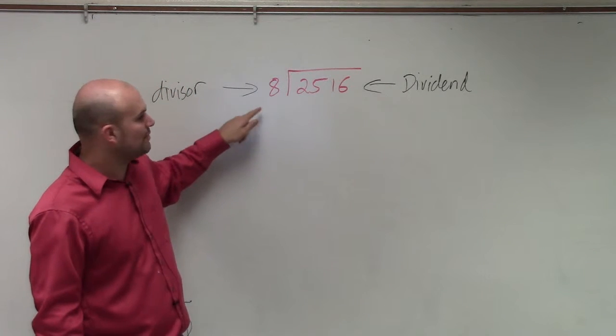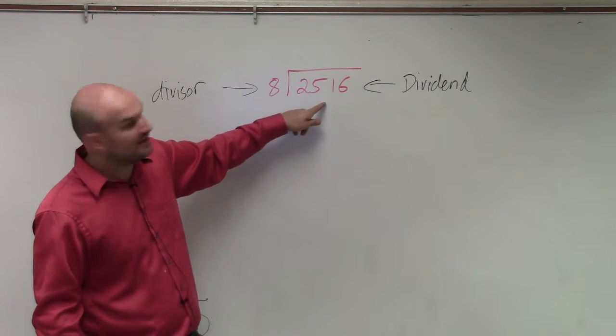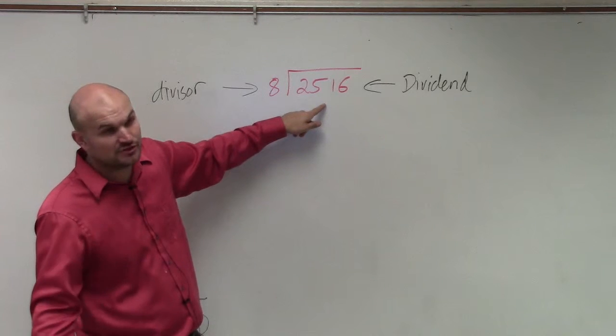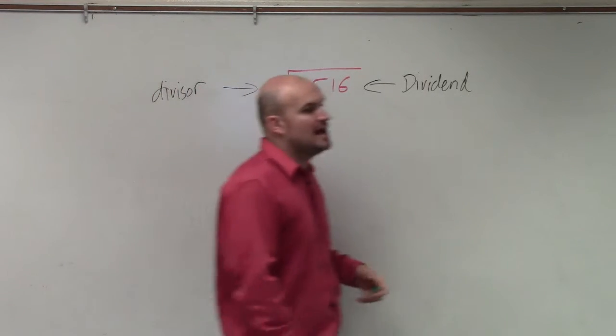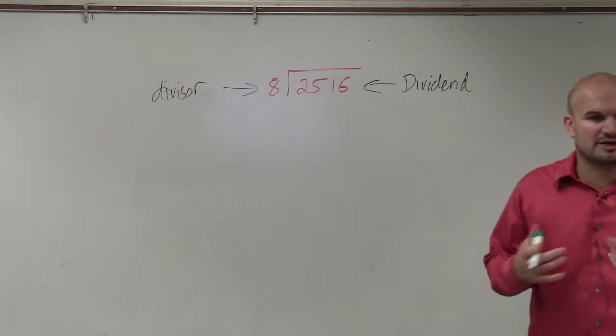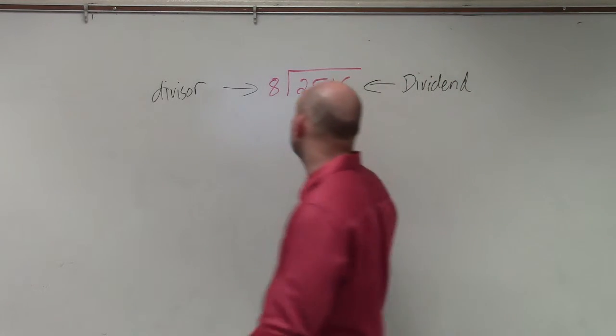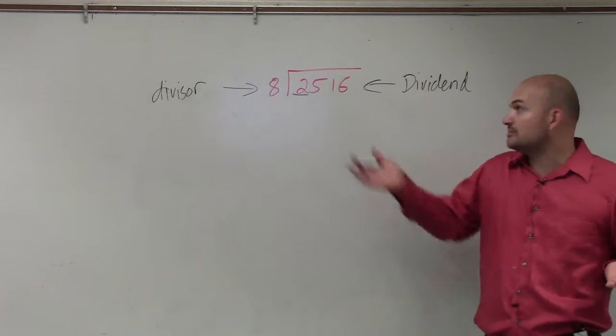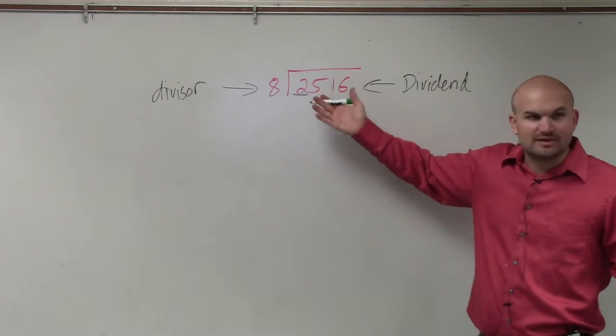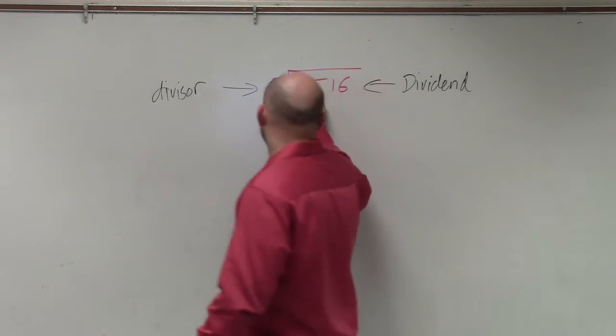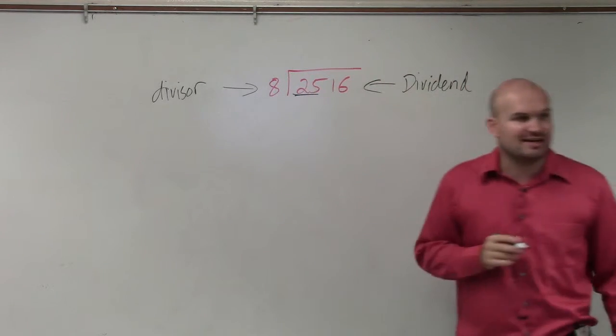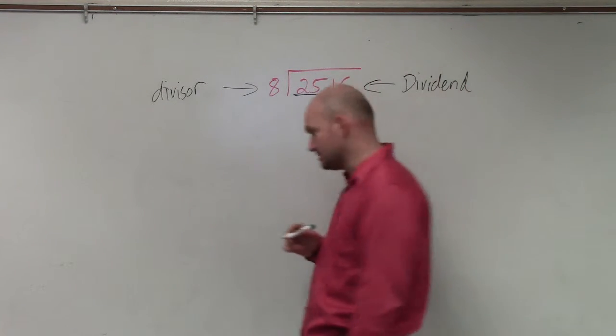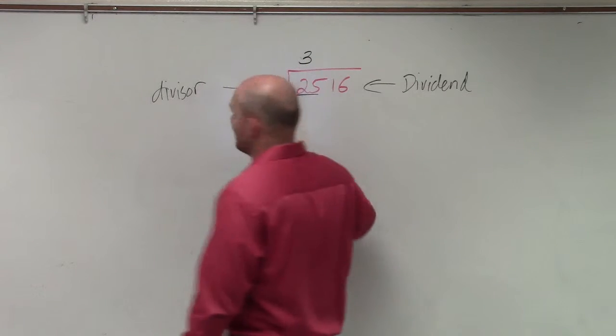Here's your divisor. That's what we're going to divide into our dividend, which is 2,516. Now when you're using long division, basically what we're going to do is use one place value at a time. I'm going to see, does 8 divide into the number 2 in the first place value? Well, 8 does not divide into 2. So then we go to the next one. Does 8 divide into 25? Yes.